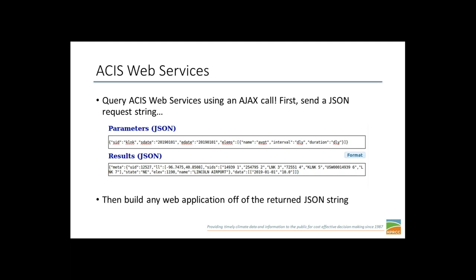ACIS Web Services returns a simple JSON string, which is just an integral part of JavaScript, so it's easily incorporated into your JavaScript applications. This is an example of the ACIS Web Services query. You can use an AJAX call — which is just a way for you to send strings to URLs and expect a response back. This is an example from the ACIS Builder where you can test request strings.